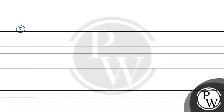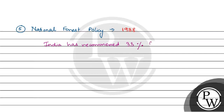Fifth is the National Forest Policy, given in 1988. India has recommended 33% forest cover for the plains and 67% for the hills.